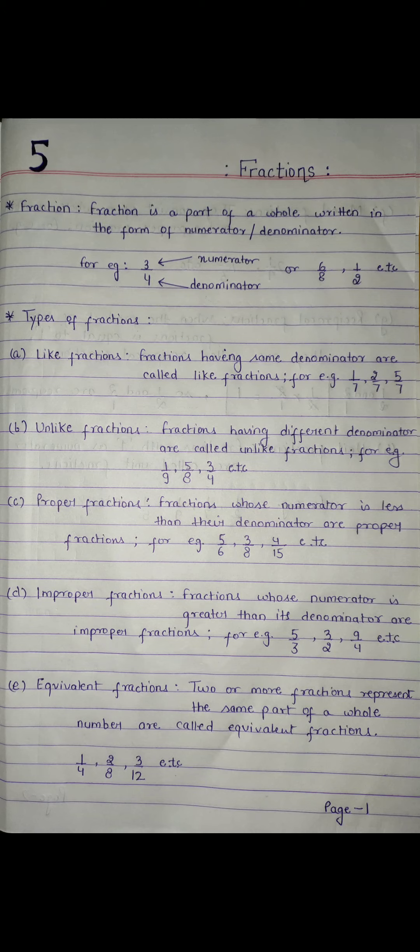Now moving further to Improper Fractions. Improper Fractions are those Fractions which have numerator greater than the denominator. It is absolutely opposite to Proper Fractions. As you can see in the example I have taken that is 5 by 3, 3 by 2 and 9 by 4. All have numerator greater than the denominator. So these are Improper Fractions.